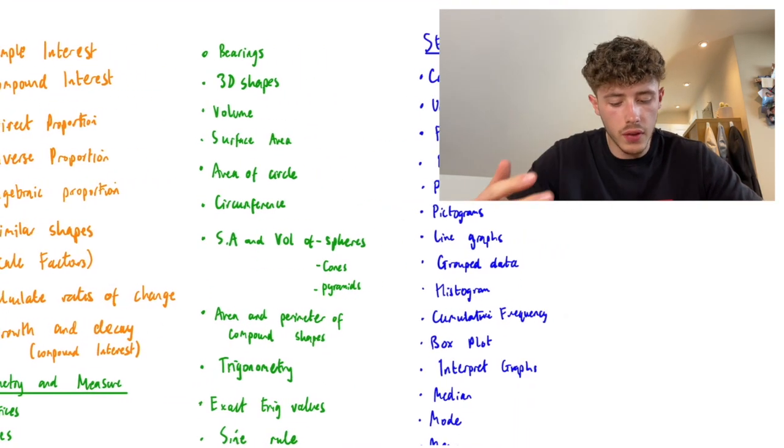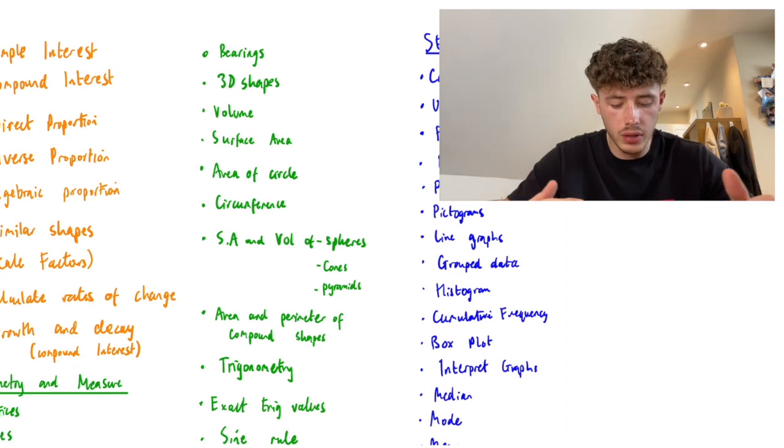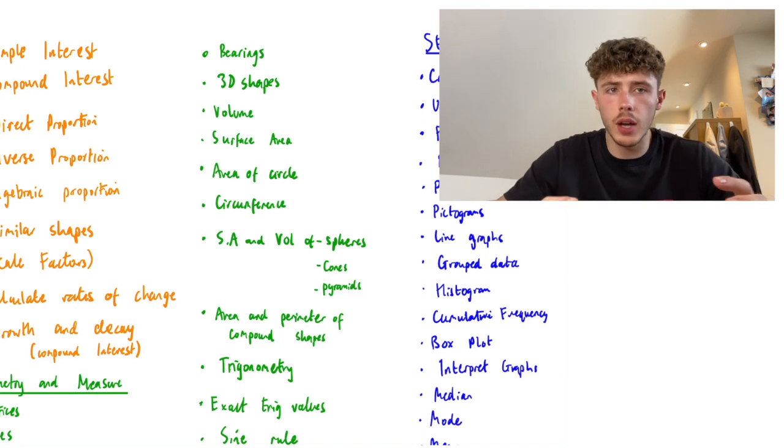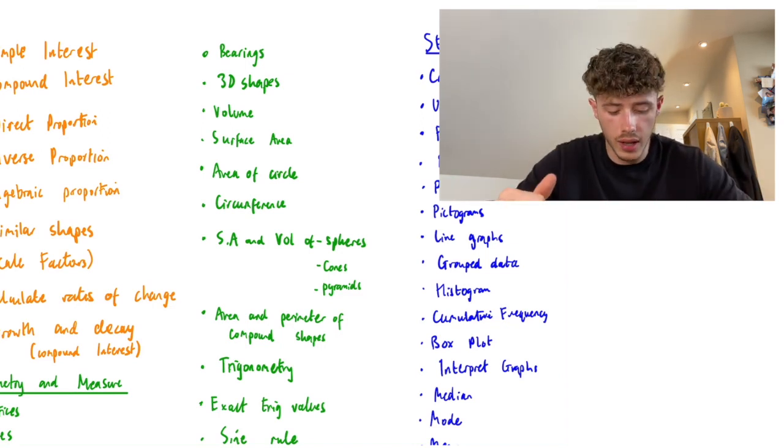3D shapes, volume, surface area, area of a circle, circumference, surface area and volume of spheres, cones, and pyramids. You may be given the formula sometimes, but I would recommend learning it just in case. Area and perimeter of compound shapes.